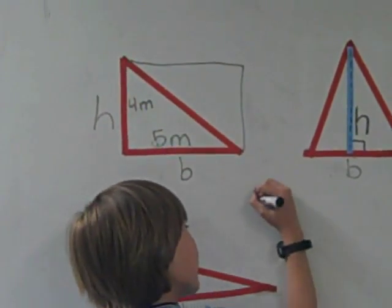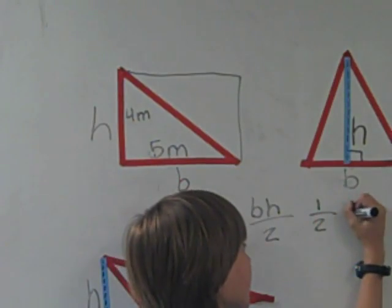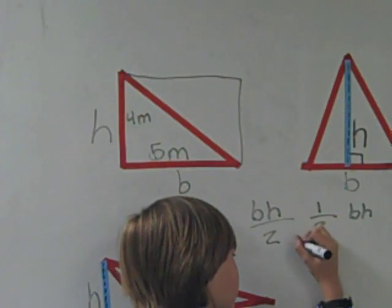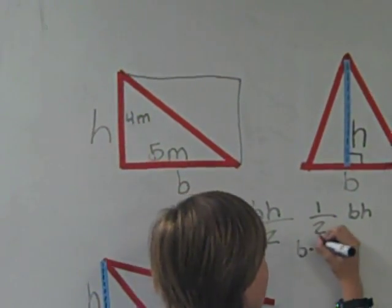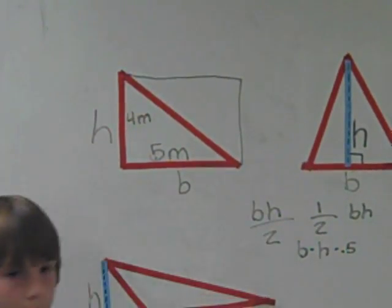The formula can be written as base times height divided by two, one-half base times height, or you can write the multiplication symbols out and then times 0.5, because that is what one-half is equal to.